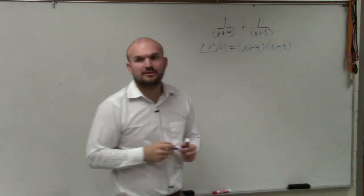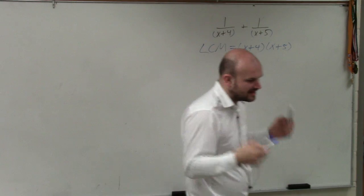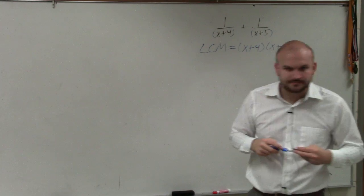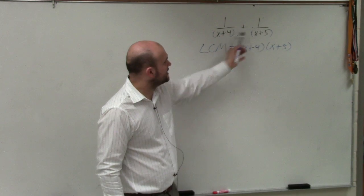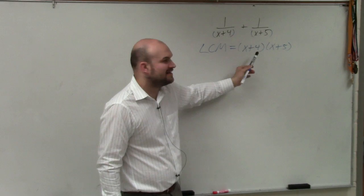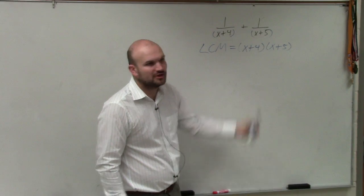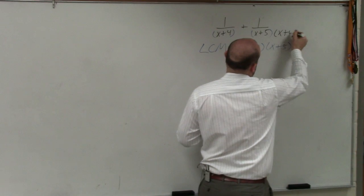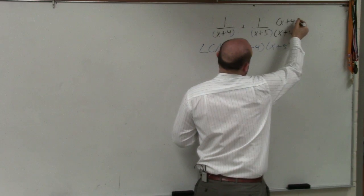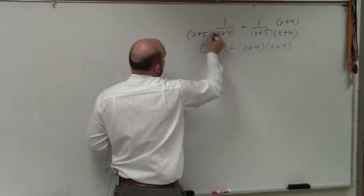What sounds like in the middle? Least common multiple, lowest common multiple. So now, we just need to produce both common multiples. So to get x plus 5 as x plus 5 times x plus 4, we need to multiply it by x plus 4. Here, I need to multiply by x plus 5.